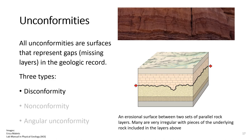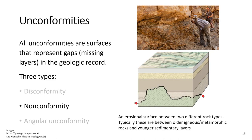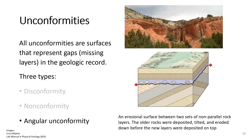The first is a disconformity, which is an erosional surface between two parallel rock layers. The second type is a nonconformity, which is an erosional surface between layers of different rock types — typically with older igneous or metamorphic rocks below and younger sedimentary rock layers on top. The last type is an angular unconformity, which is an erosional surface between two sets of non-parallel rock layers. This occurs when one set of rock layers are deposited horizontally and subsequently tilted and eroded down, and eventually a new set of rock layers are deposited on top.